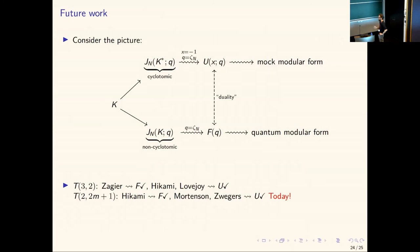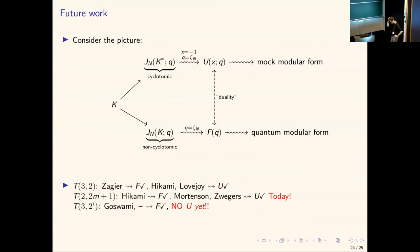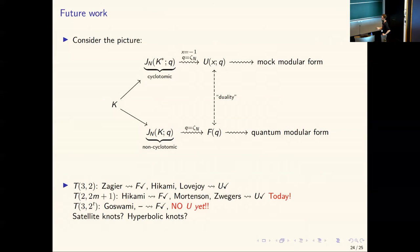The general picture looks like this: given a knot K, you go in one of two directions. If the colored Jones polynomial has a radial asymptotics expansion, you extract an F(q) and get a quantum modular form. If it has a cyclotomic expansion, you extract a U(q) and get a mock modular form. This picture has been verified for the trefoil and for the infinite family T(2, 2m+1). The bigger story is that by Thurston's classification, knots come in three types: satellite, torus, and hyperbolic. All the results so far are for torus knots; extending this picture to hyperbolic and satellite knots is a long-term ongoing project.